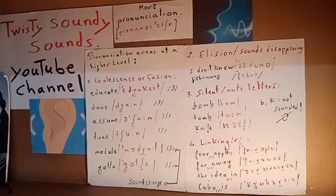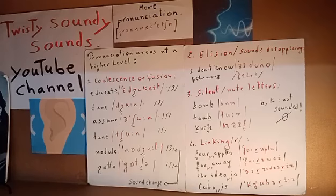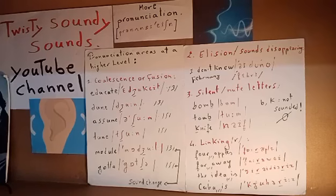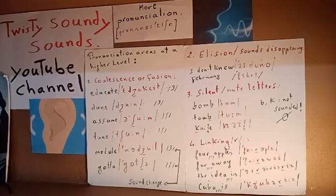Example number three: another feature is silent and mute letters, which is very common in the English language. Examples: 'bomb' — we don't say 'bom-b,' the 'b' is silent. 'Tomb,' 'knife' — the 'b' and 'k' letters are silent mute letters, not pronounced. I repeat: bomb, tomb, knife.